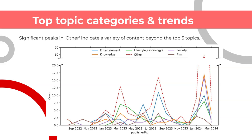Interestingly, we found the YouTube Data API provides a list of Wikipedia URLs that give an estimation of the video's content. Given that a video can relate to more than one topic without a quantification of its association strength, we treat each topic as equally relevant, and we found there were over 15 different topics. The most common topics were entertainment, knowledge, lifestyle, society, and film, in this order.